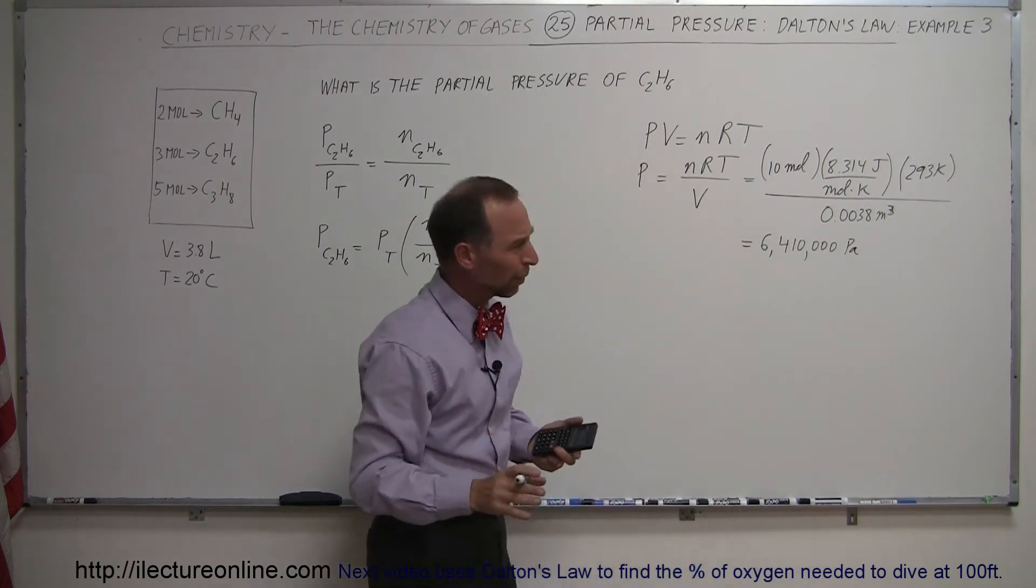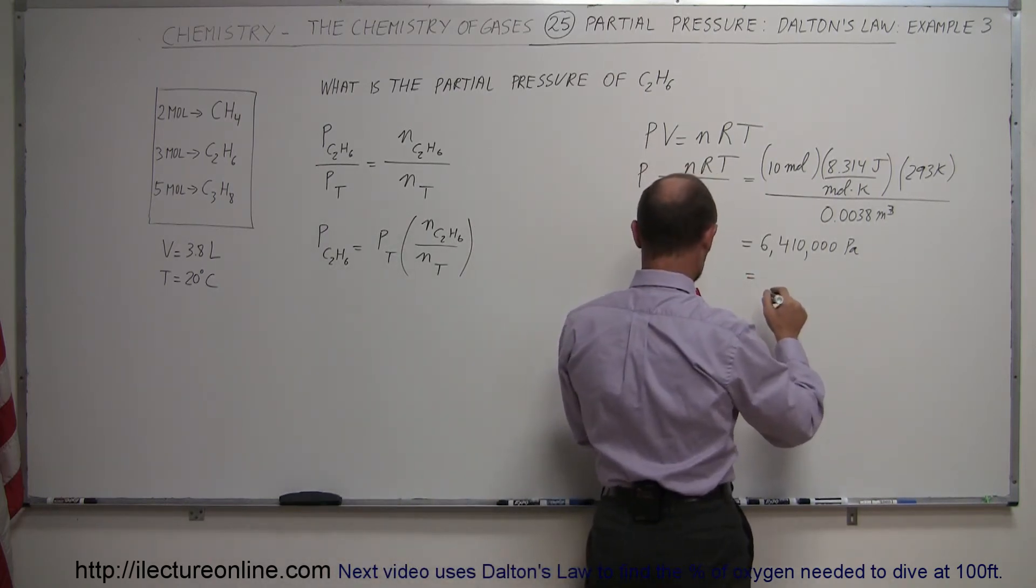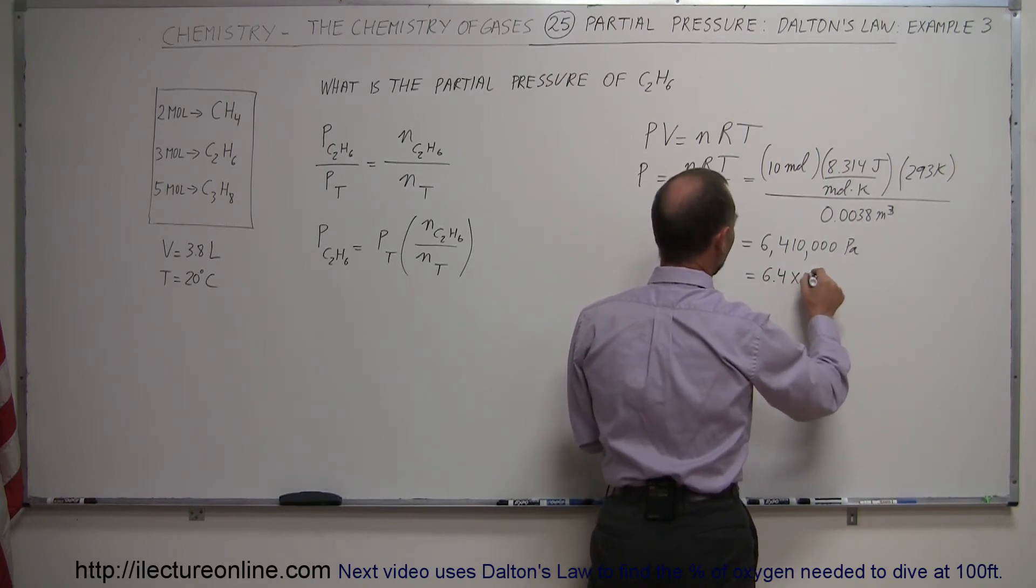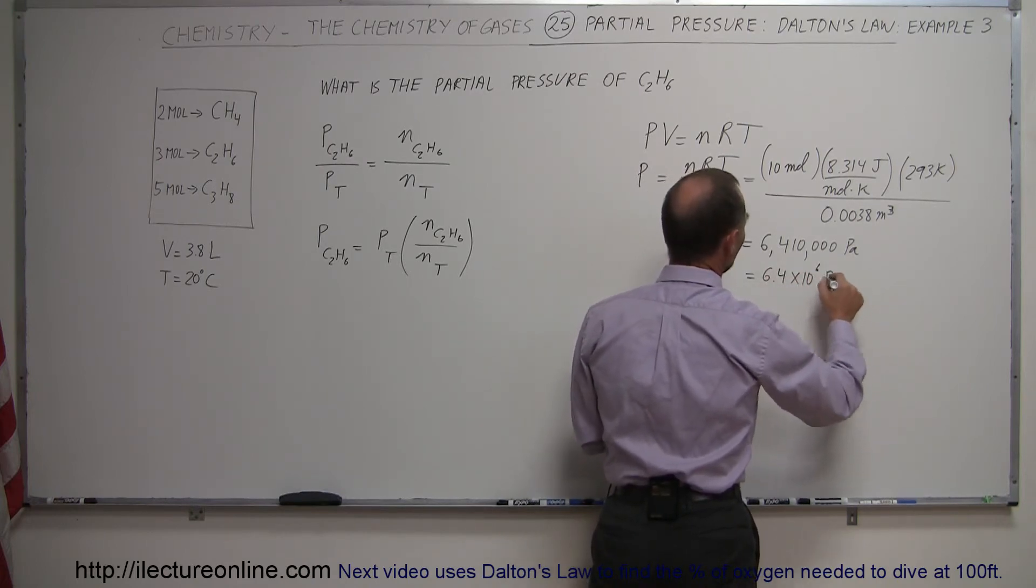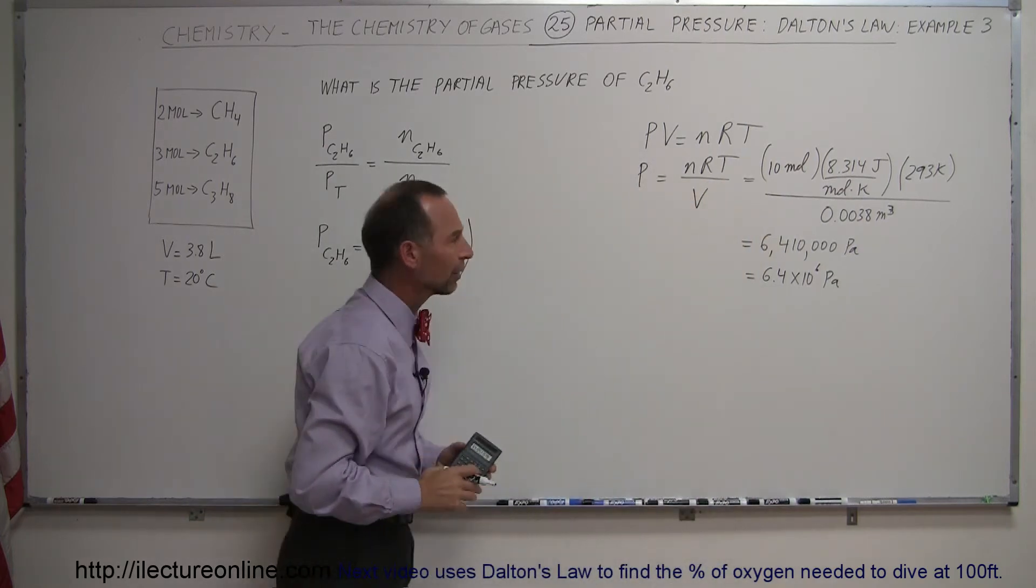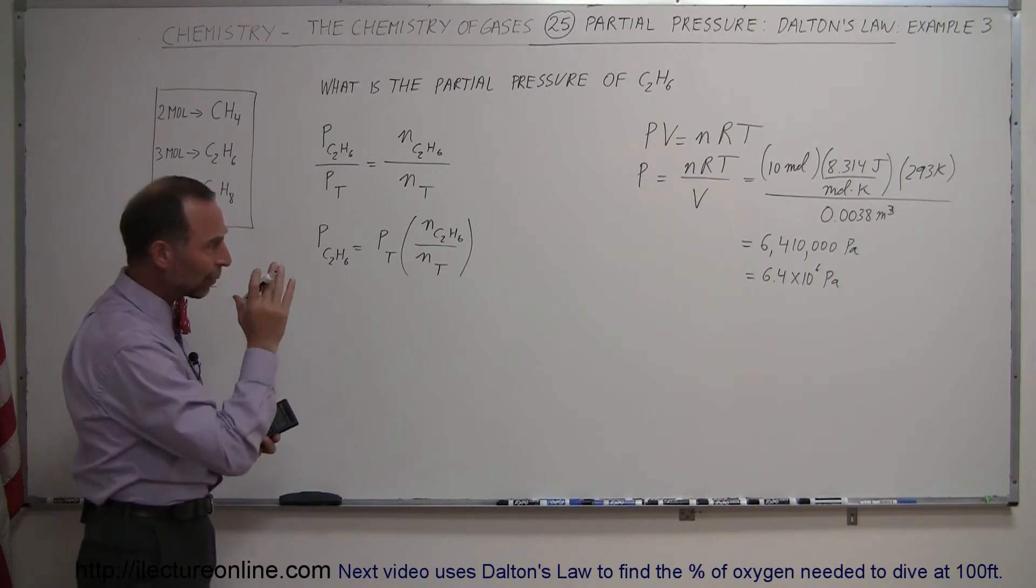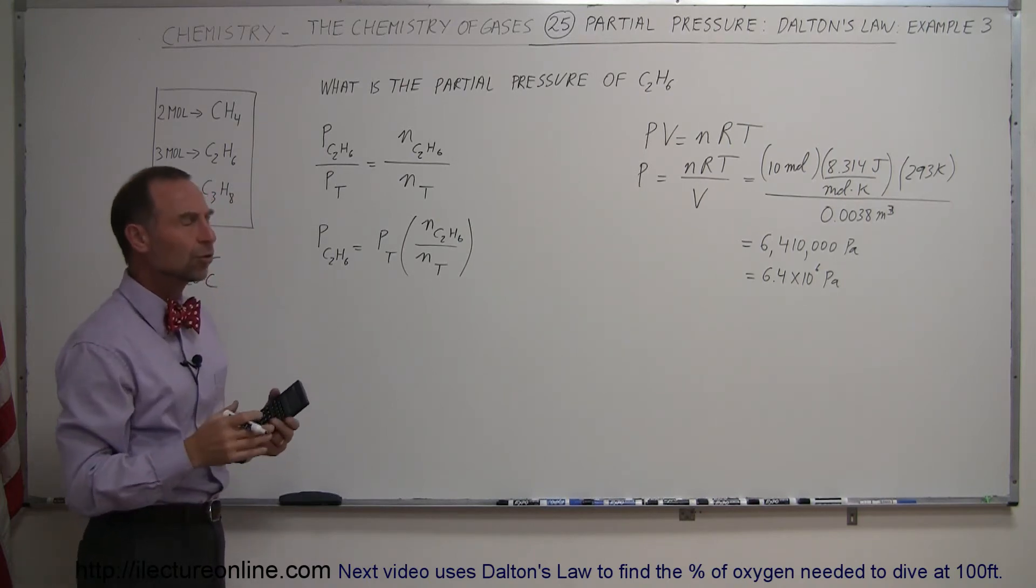Of course, we probably want to write that in scientific notation like this: 6.4 times 10 to the 6th Pascals. So we use that methodology. Now what if we want to write this in terms of chemistry units?